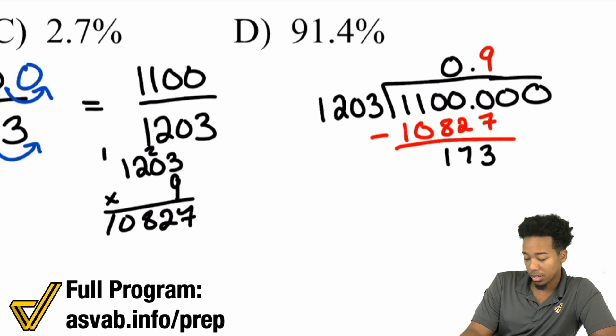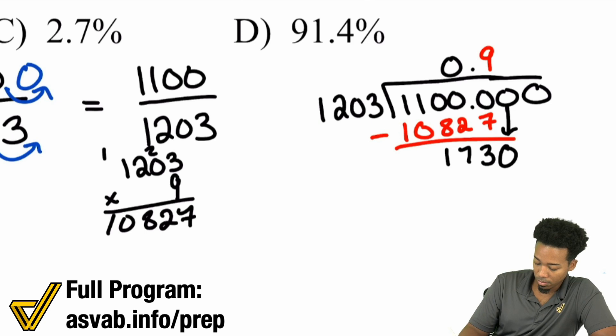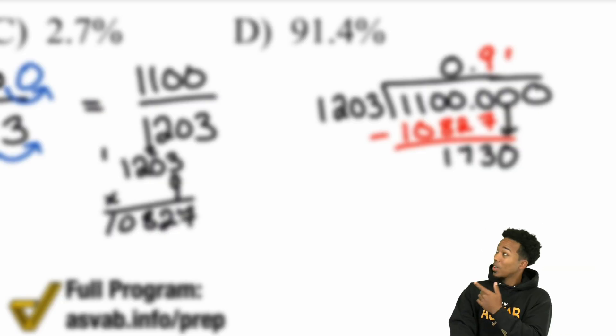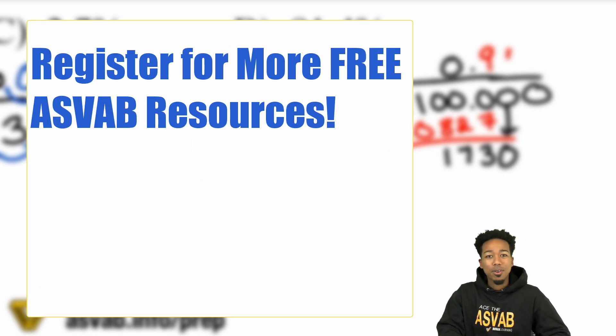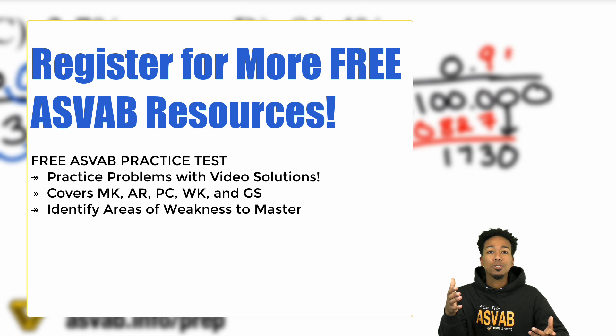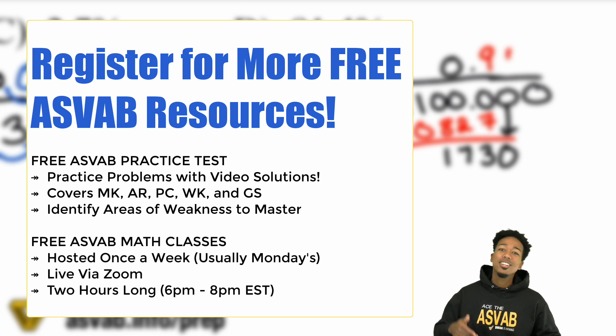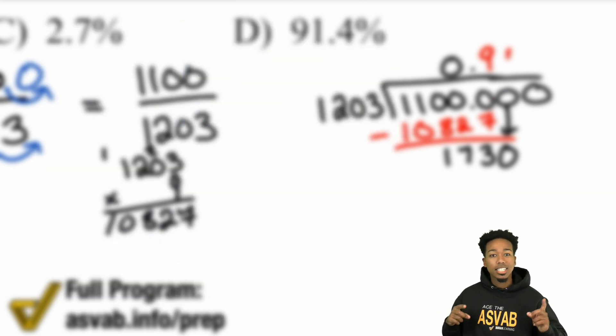Now with the 173, we're going to drop that zero. 1203, how many times does that go into 1730? That's going to be exactly one time. Just like you're watching this video for free on YouTube, I got more free materials for you. We've got a free practice test that comes with video solutions so you can learn from every mistake and identify those topics you need to work on. Plus, you can get a free class with me on Zoom once a week. Click that link in the description, sign up, keep learning for free.